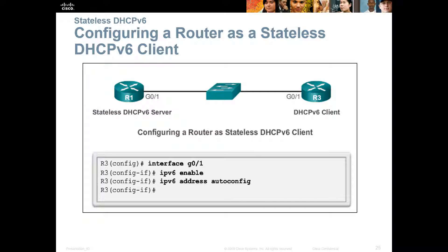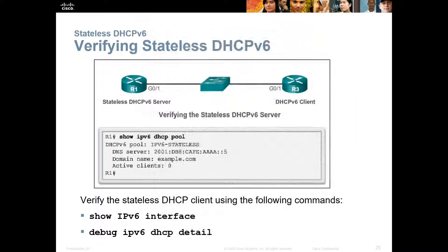To configure the router as a stateless DHCPv6 client, navigate to the appropriate interface, enable IPv6 with 'ipv6 enable,' then use 'ipv6 address autoconfig' — autoconfig lets it use SLAAC. For verification, use 'show ipv6 dhcp pool' to see pool information, 'show ipv6 interface,' or 'debug ipv6 dhcp detail.'